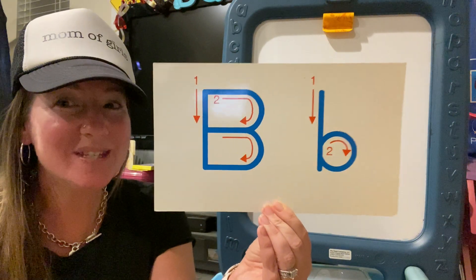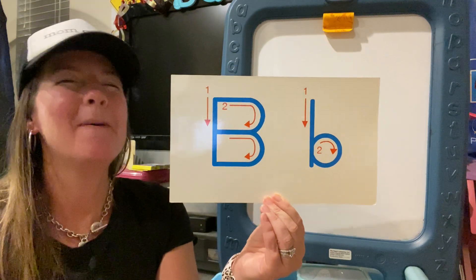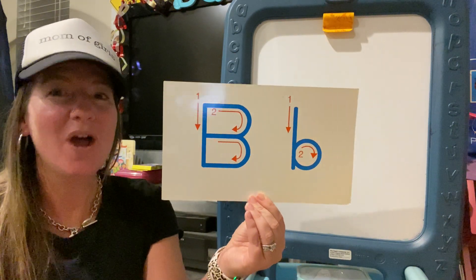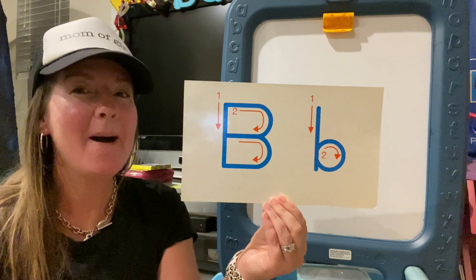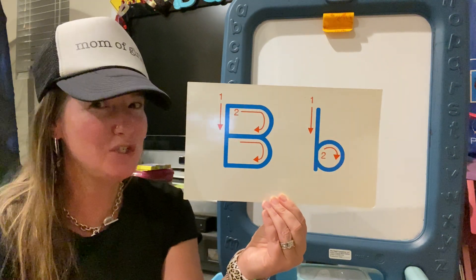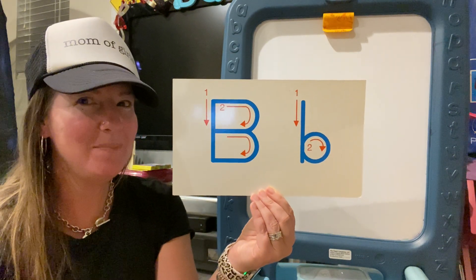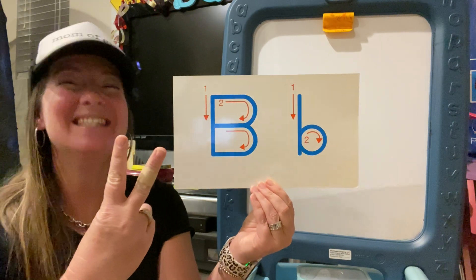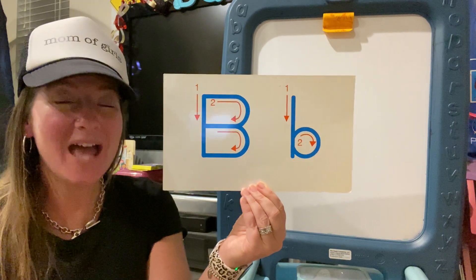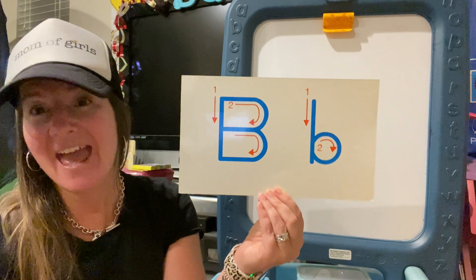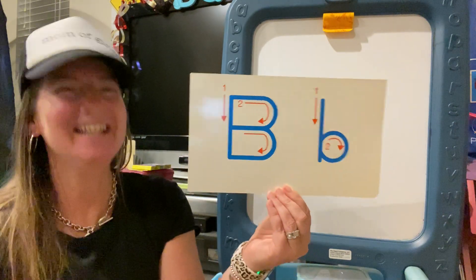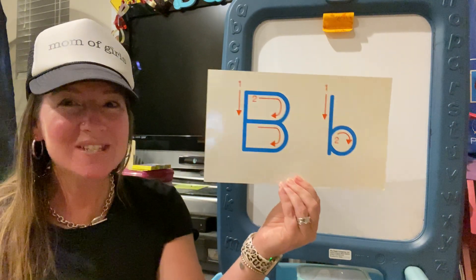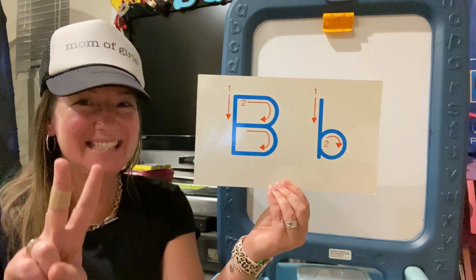One more time — what sound does the letter B make? Buh, buh, buh. Good. Buh, buh, buh. And B — do you know what number in the alphabet B is? Two. It's the second letter in the alphabet. A, B, C. Good. There are 26 letters altogether and B is the second.